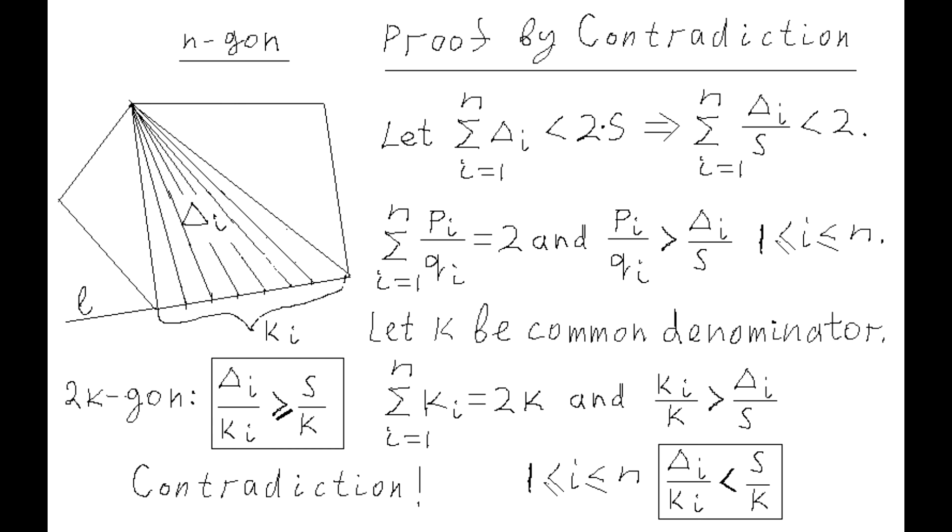If K is a common denominator of all PI over QI, then we can rewrite the equality as the sum of numbers KI, where I varies from 1 to N, equals 2 times K. And each KI over K is strictly greater than the area of the corresponding super triangle over S, the area of the given polygon.